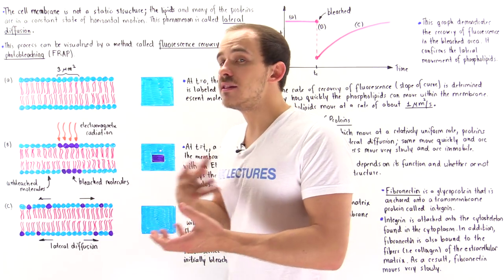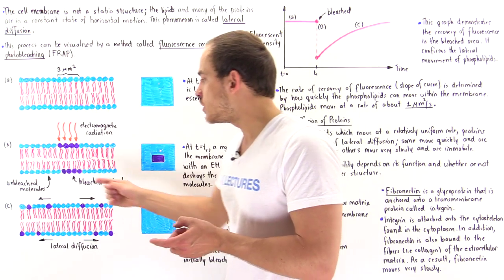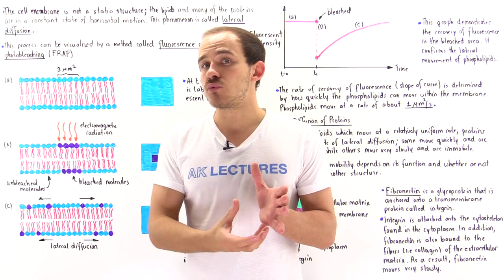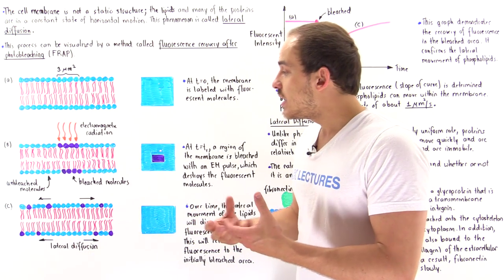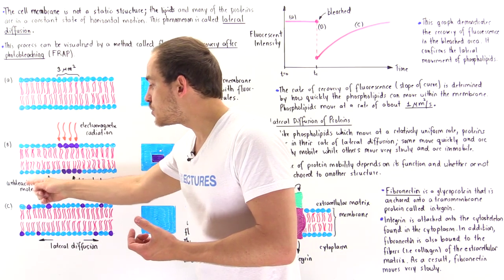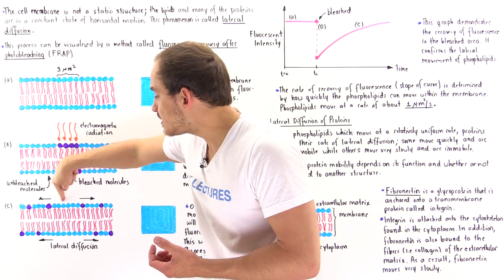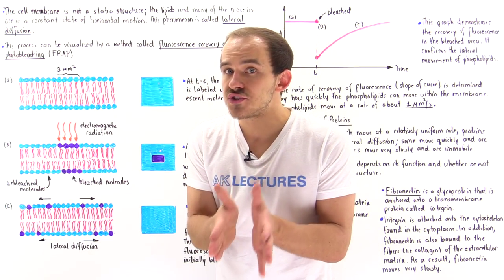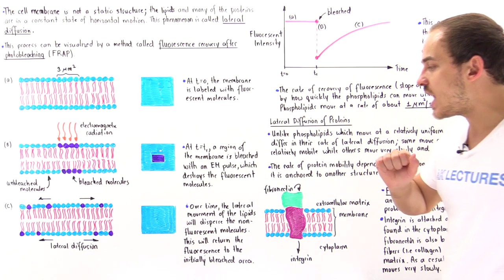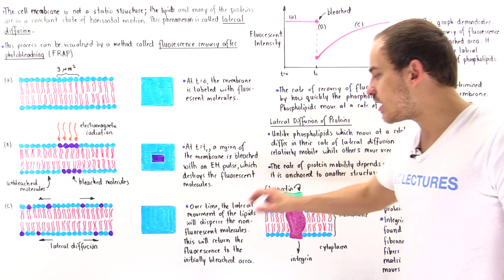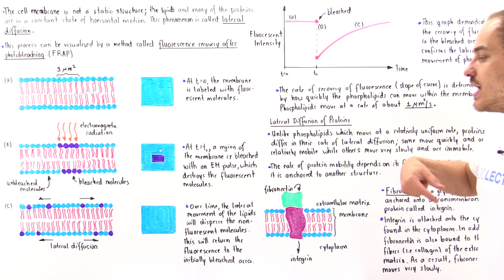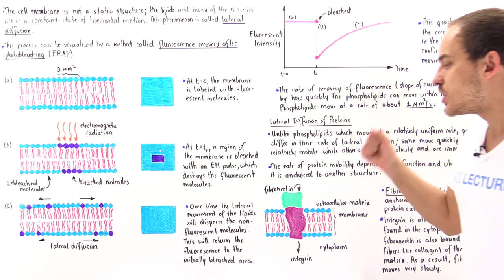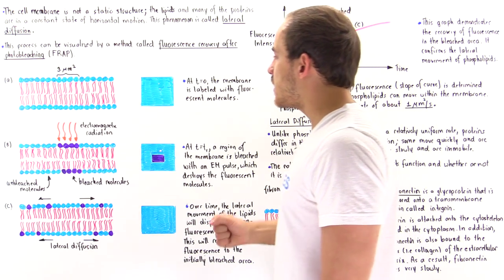But what happens is, because there is a lateral movement of these molecules, eventually these bleached molecules will disperse throughout that membrane. And what that means is, because these unbleached molecules will replace the bleached molecules in this area, that will recover the fluorescence in that particular area. So over time, the lateral movement of the lipids will disperse the non-fluorescent, the bleached molecules. This will return that fluorescence to that initially bleached area.